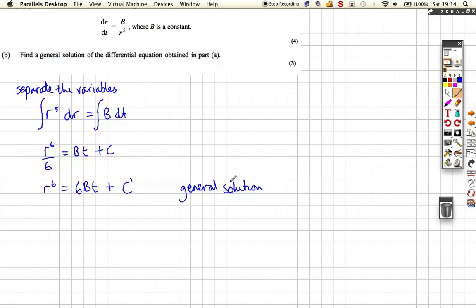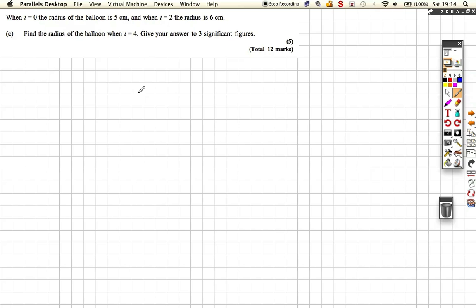But we need that general solution. We need some conditions - sometimes they're called boundary conditions, sometimes they're called initial conditions. We need some conditions to work out what the c and b are, and that will give us the particular solution. So let's go on and do that. So here we are. When t is 0, r is 5. And the second set of conditions we're told is when t is 2, r is 6. And we want to find out the radius when t is 4.